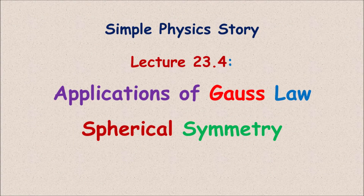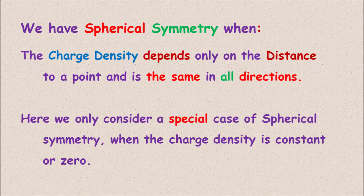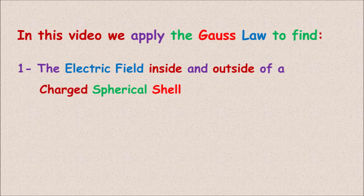Hi everyone, Kamran Nouri here. This video is on the application of Gauss's law to problems with spherical symmetry. We have spherical symmetry when the charge density depends only on the distance to a point called the center of symmetry and does not depend on the direction from that point. Here we only consider special cases when the charge density is constant or zero. In this video we apply Gauss's law to find the electric field inside and outside of a spherical shell with uniform surface charge density.